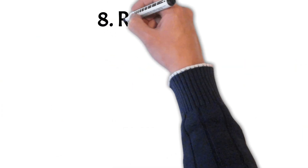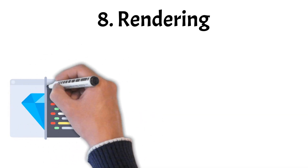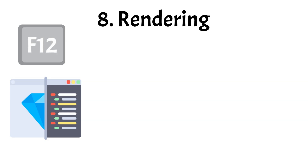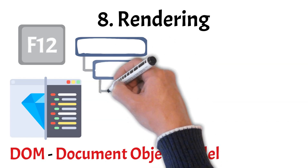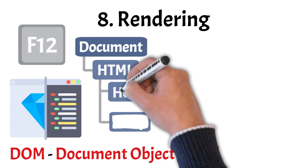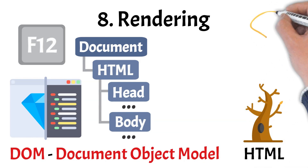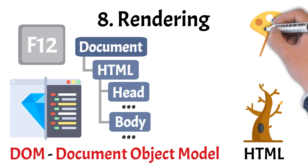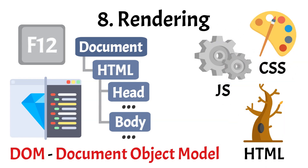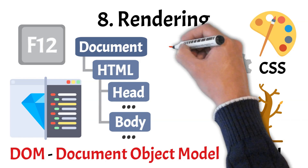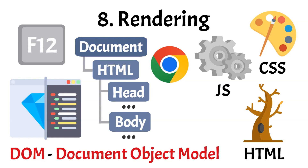Rendering is where the browser transforms code into something you can actually see and interact with. If you press F12, you can peek behind the scenes using browser developer tools, revealing the DOM — a structured representation of the page's HTML. This tree-like structure helps the browser understand what to display and how. The HTML defines the content and structure, CSS brings it to life with visual styling, and JavaScript enables real-time behavior and interaction. Together, these layers form the backbone of modern websites, processed and rendered by browsers like Chrome into the polished pages you use every day.